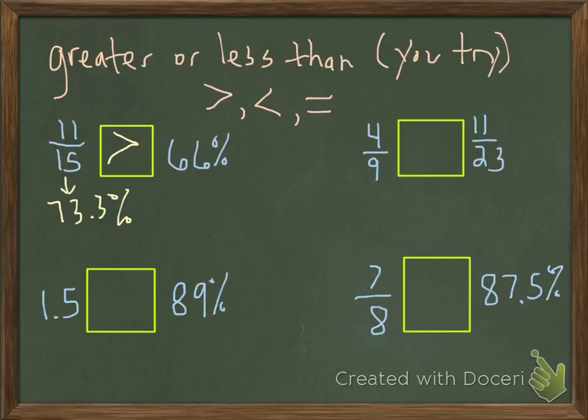Let's look at the bottom left one, 1.5 compared to 89%. We're going to treat this like a decimal number. Decimal numbers, we have to move the decimal point two places to the right. If there's no digit there, we have to make one happen. So you're actually looking at 150%. 1.5 is 150%. So that number is certainly greater than 89%.